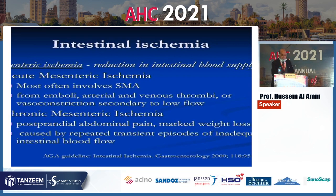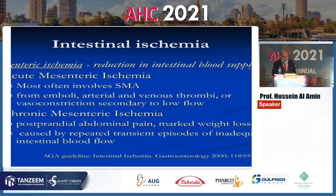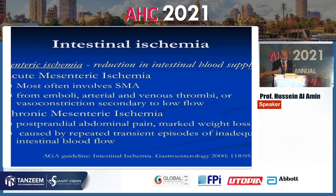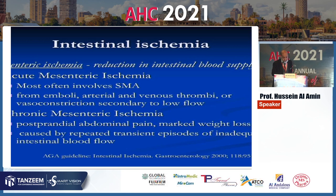Colonic ischemia differs from ischemic attacks that affect the small intestine. Acute mesenteric ischemia most often involves the superior mesenteric artery from embolus, thrombus, or venous thrombus. Chronic mesenteric ischemia, called intestinal angina, leads to provoked abdominal pain caused by repeated transient episodes of inadequate intestinal blood flow.